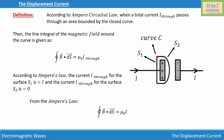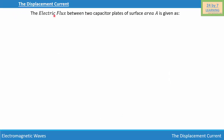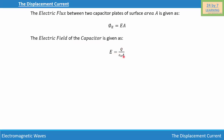From Ampere's Law, the integration of vector B dot vector dS equals mu-zero times I. The electric flux between the two capacitor plates of surface area A is given as phi-E equals E times A, where phi-E is the electric flux, E is the magnitude of the electric field, and A is the surface area. Since E equals Q over epsilon-zero A, substituting gives phi-E equals Q over epsilon-zero A times A, and canceling A gives phi-E equals Q over epsilon-zero.